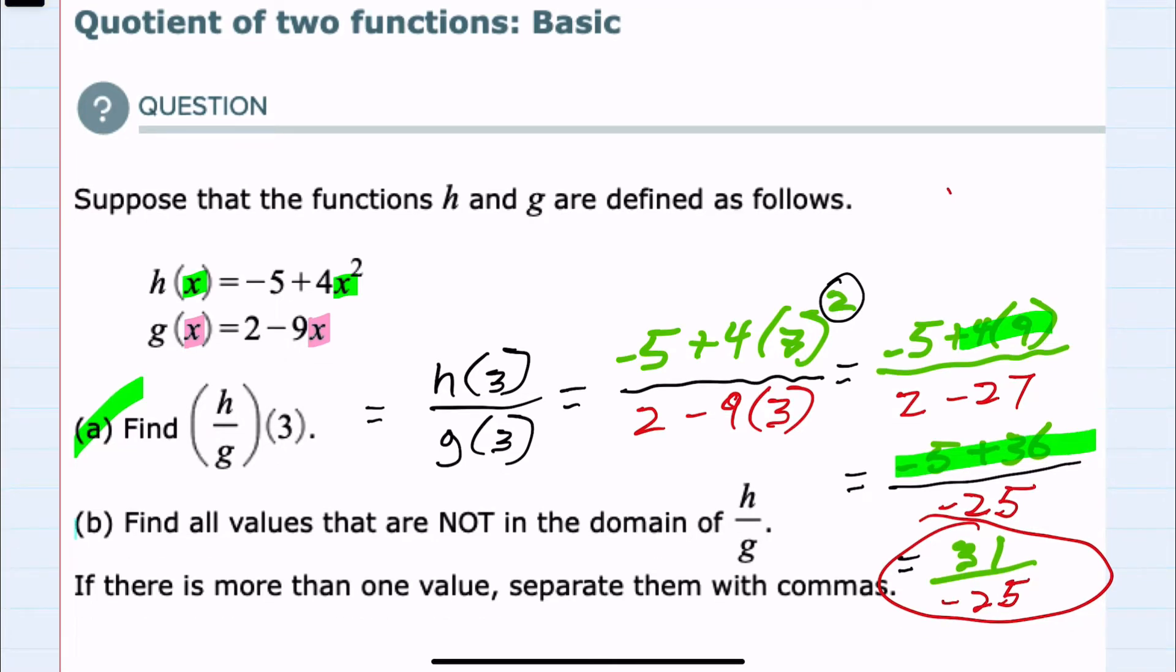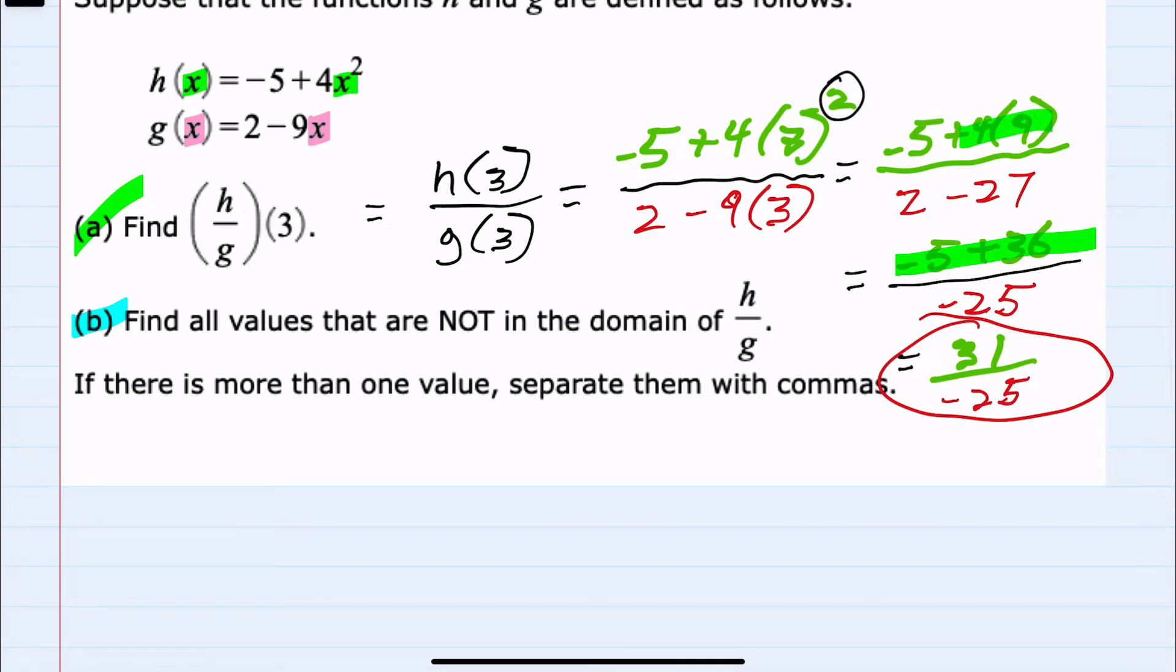Looking now at question (b): find all values that are not in the domain of h/g. So h/g would be h(x) in the numerator and g(x) in the denominator. Here, the only limiting factor is that we can plug in any value for x into the numerator.